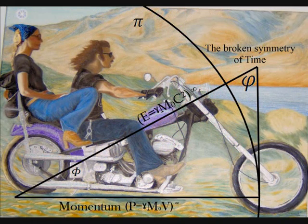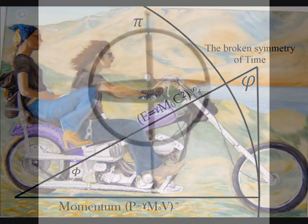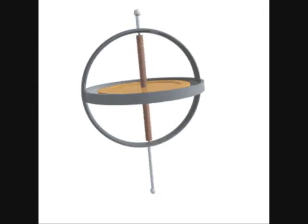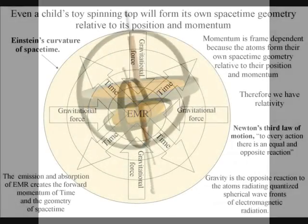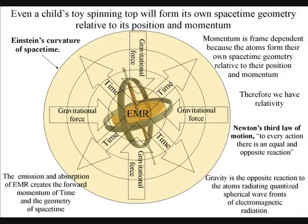Because of this momentum, is itself frame-dependent, and the observer, as a group of atoms, is the only true reference frame. Even a child's toy spinning top will form its own space-time geometry, relative to its position and momentum.